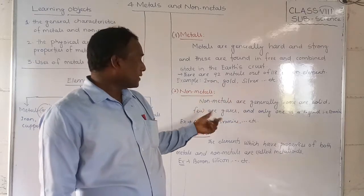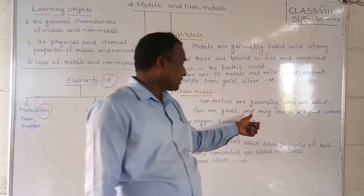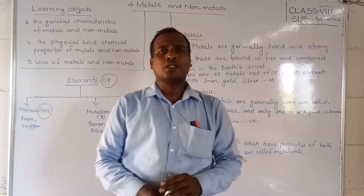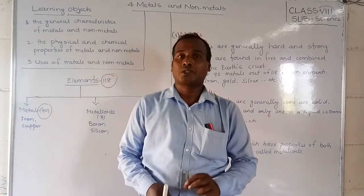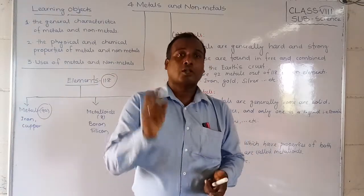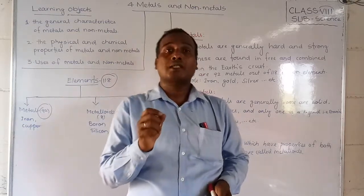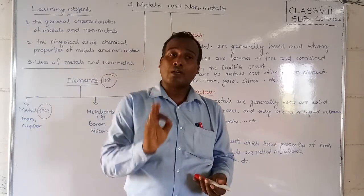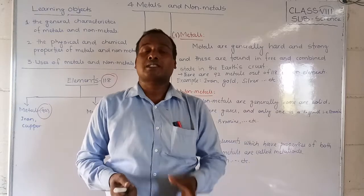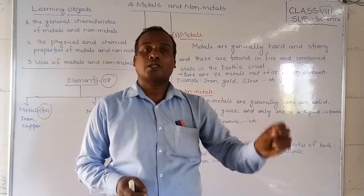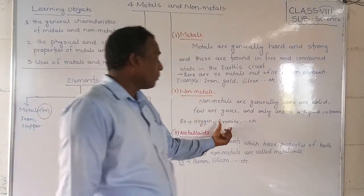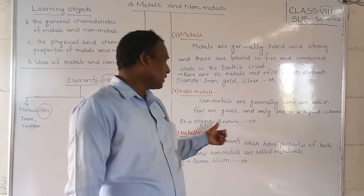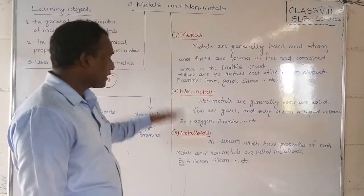What are non-metals? Non-metals are generally solid or gaseous, and only one non-metal is liquid — that is bromine. You know that mercury is used inside a thermometer as a thermometric fluid. Mercury exists in liquid state at room temperature, but it belongs to the metal category. Examples of non-metals include oxygen and bromine. Some non-metals are solids, but generally oxygen and bromine are well-known non-metals.